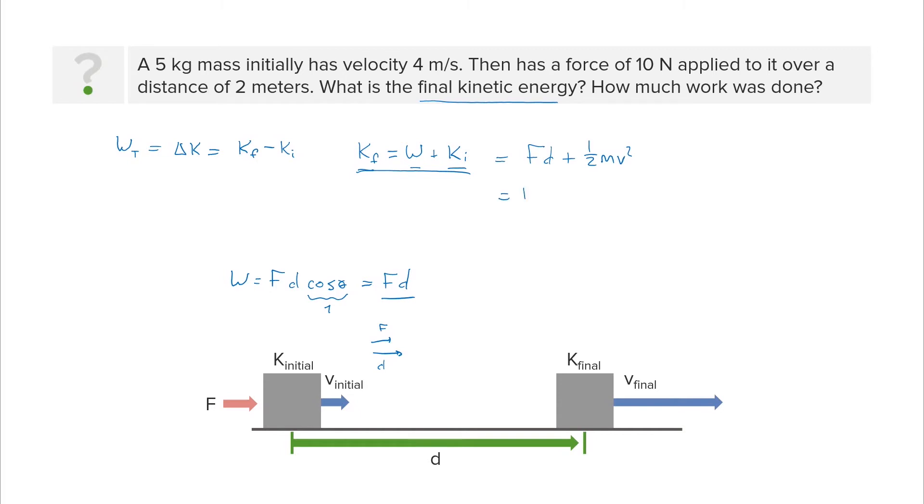It's the force times distance, which is 10 newtons times 2 meters. We're going to add that to the initial kinetic energy, which was one-half our mass, which is 5, times our velocity, which is 4 squared.